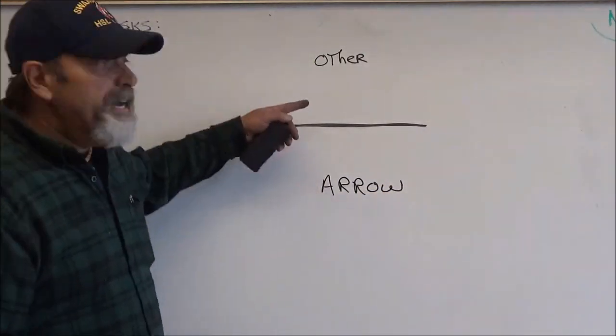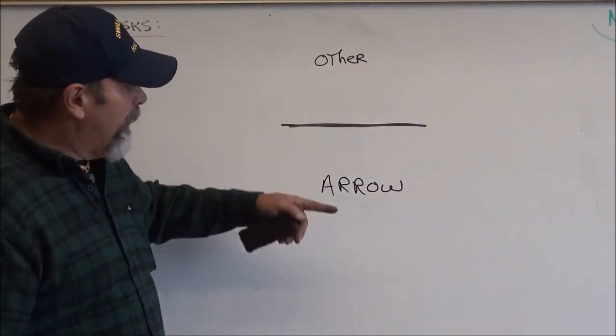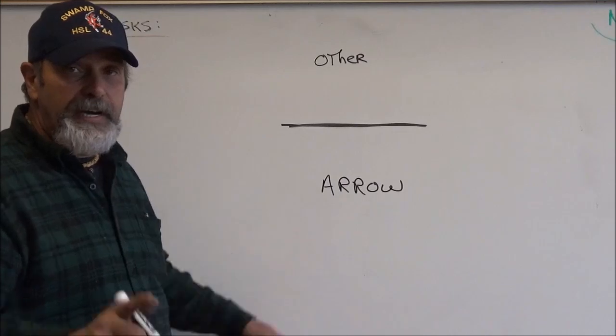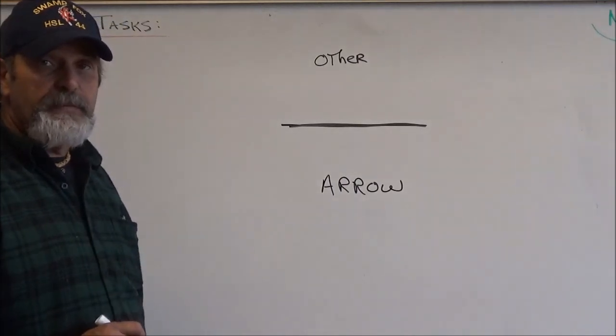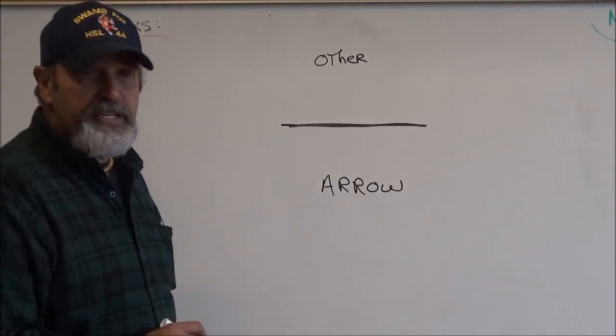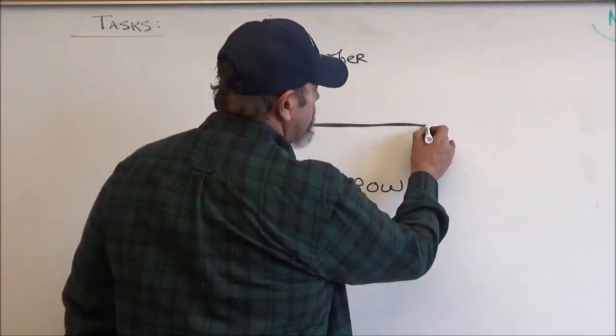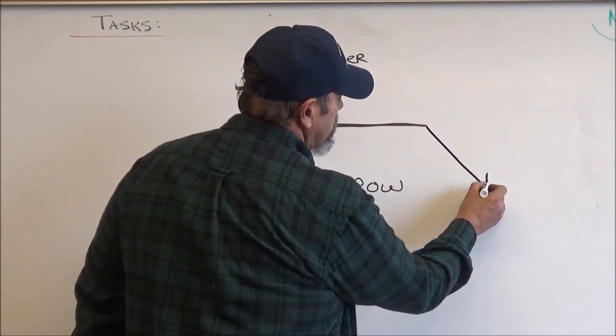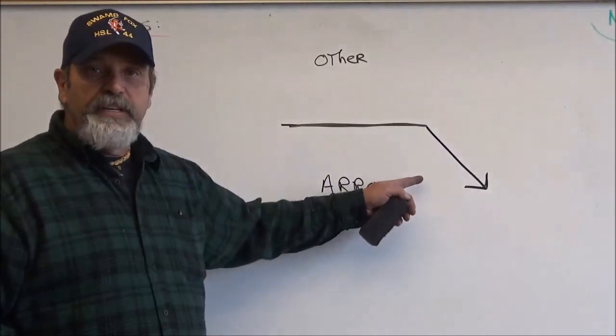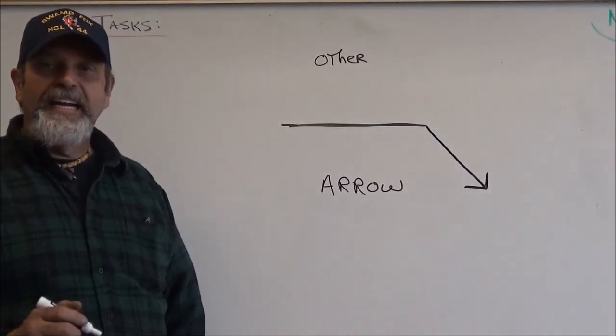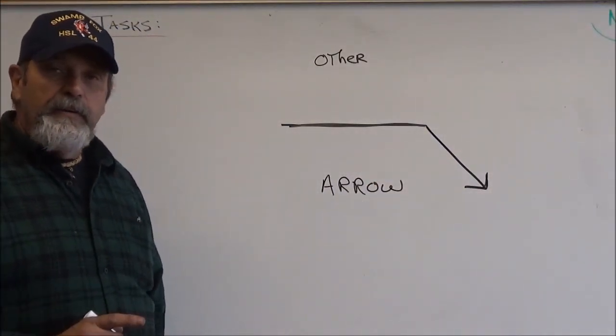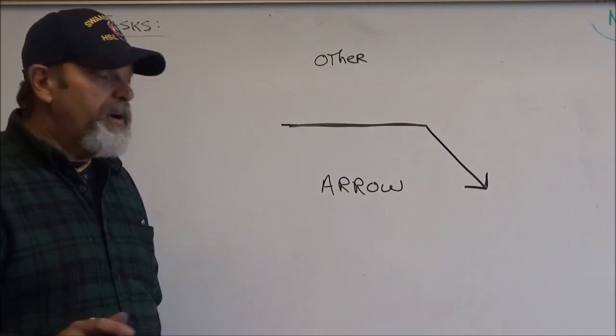So one side is called the other side. The opposite side is called the arrow side and that's all going to make sense to you in just a minute. Let's go ahead and put a reference arrow on this. All right. This is my reference arrow or what we call a leader. Now the leader is going to point towards the welding joint.